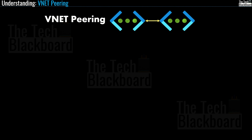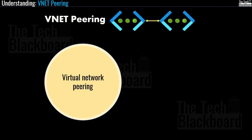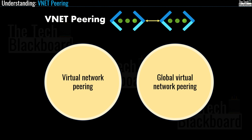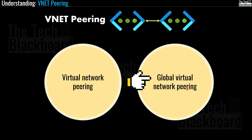Azure supports two types of pairing. The first is Azure Network Pairing, which connects virtual networks within the same Azure region. The second is Global Virtual Network Pairing, which connects virtual networks across Azure regions. Please note this difference clearly — the first type is for the same region, and the second is for cross-region connectivity.